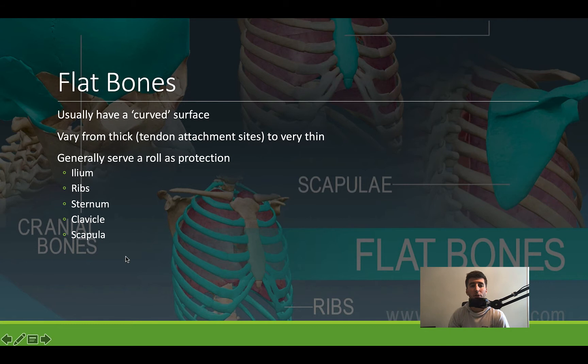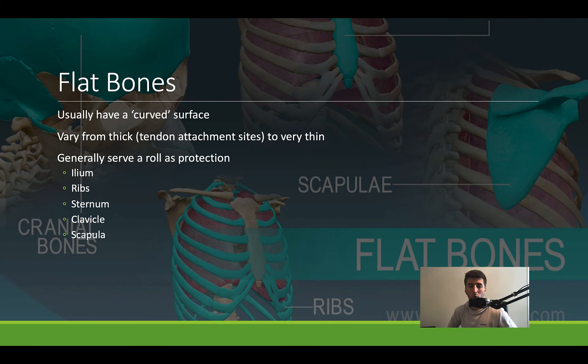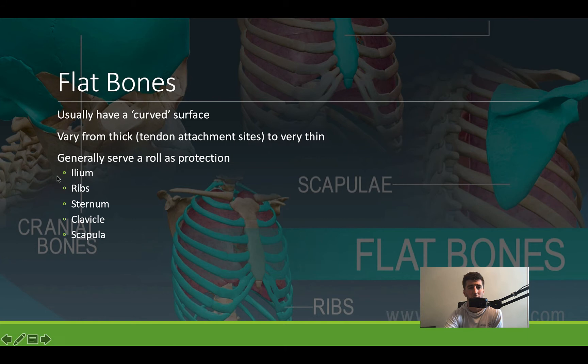Flat bones — you'll never guess — might have some flatness to them. Great examples: the ileum, which is flat in shape, the ribs, which are curved but have flat sides to them — as anyone who's ever held a rib knows — the sternum, and the cranial bones, which you can see in the background image here.